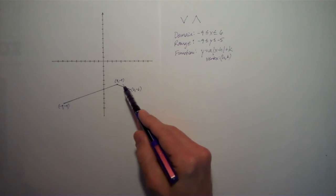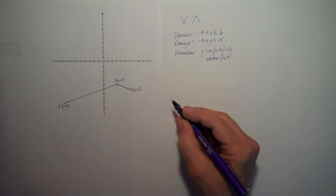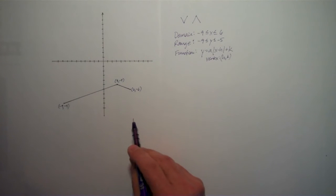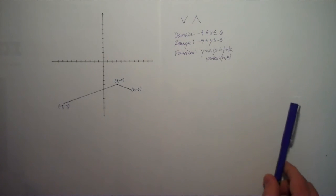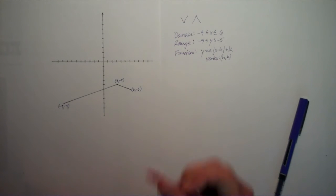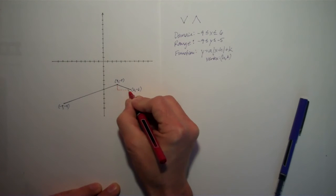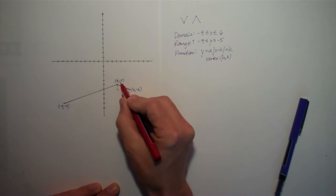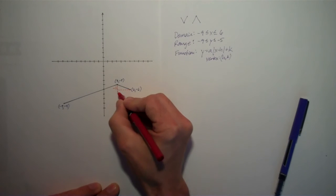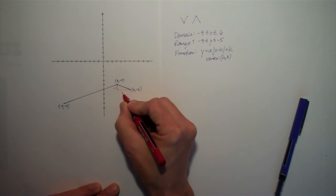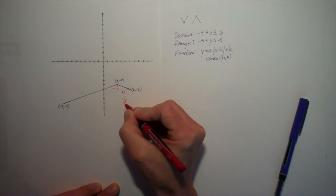The vertex is at the point h, k. So vertex, that's this part right here, 3, negative 5. And a is the slope of the right side of the function. So if I want to measure the slope of this function, I would say, what's my change in y and what's my change in x? y is just going down from negative 5 to negative 6, so that's going down by 1. x is increasing from 3 up to 6, so that's going up by 3. So that means the slope of this is negative 1 third.